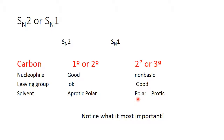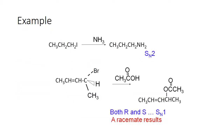If you have a good leaving group, a good nucleophile, and a polar aprotic solvent, that's going to be an SN2 reaction. But if you've got a polar protic solvent and a good leaving group but a lousy nucleophile, that's going to go SN1 for a secondary carbon. So here are some examples.